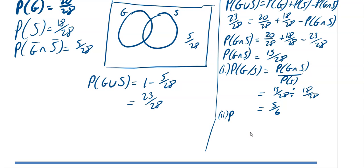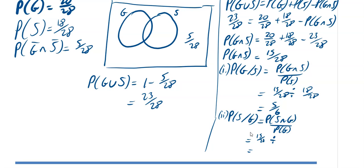For part 2, if they study geography what is the probability they study Spanish? So geography is the given condition. It is P(S intersect G) divided by P(G). Note that P(S intersect G) is exactly the same as P(G intersect S), so that is (15/28) divided by (20/28), which gives 3/4.